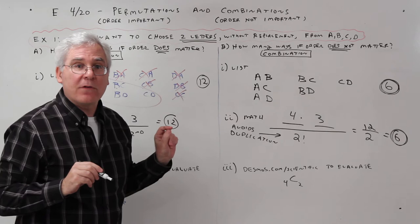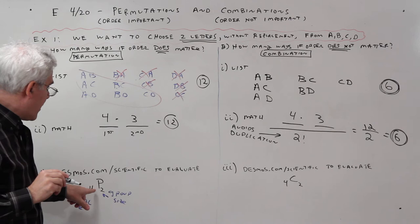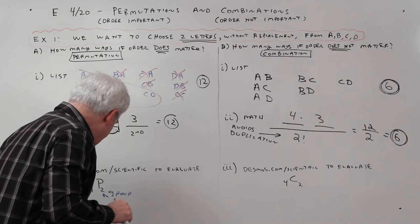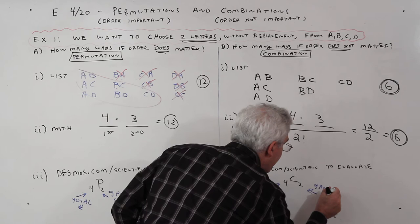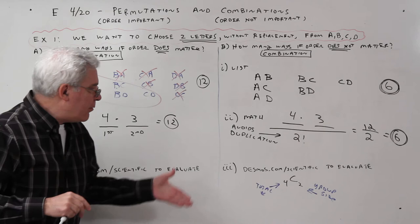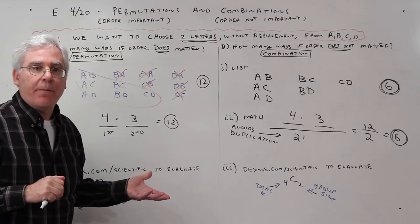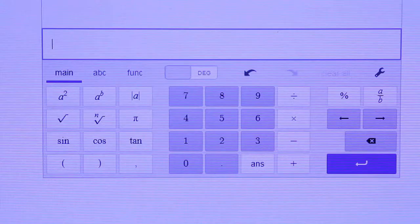And then when we do the Desmos calculator, instead of going 4p2, I'm going to go 4c2. And again, this 4 is the total number of objects. And this 2 is the group size. And again, for much of what you do on the Alex homework, you can simply just use these formulas. I just want to show you where they came from.